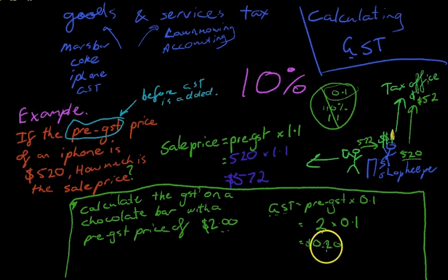In other words, $0.20. Finally, that means if we wanted to, the question didn't ask us for it, but if we did want to know the sale price, we know that the sale price would be equal to whatever the pre-GST price was, $2, plus the GST, which was $0.20. So it's going to cost $2.20 to buy that chocolate bar.